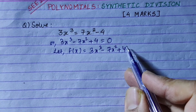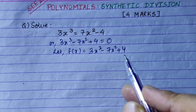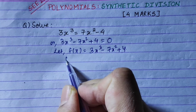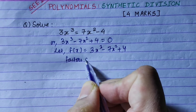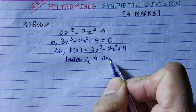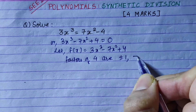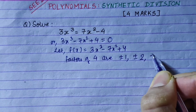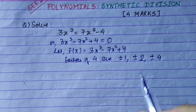The last term (constant) is 4. The factors of 4 are ±1, ±2, ±4.